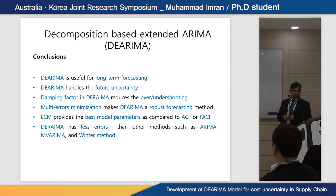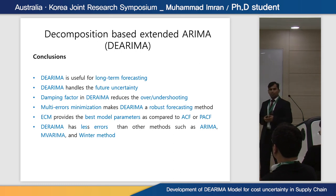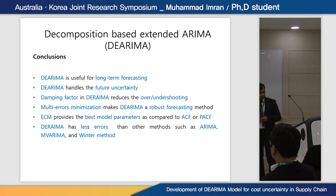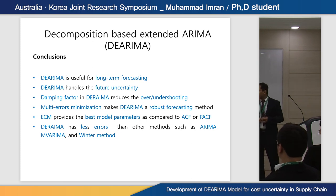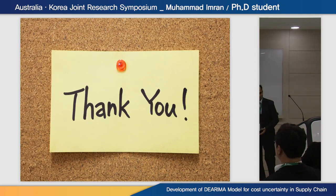In conclusion: de ARIMA is useful for longer-term forecasting; it considers future uncertainty; the damping factor in de ARIMA reduces overshooting; multi-error minimization makes de ARIMA a robust forecasting method; the exact combination method provides better model parameters compared to autocorrelation function and partial autocorrelation function; and de ARIMA has less error than ARIMA, multivariate ARIMA, and the Winter method. These are the references, and that concludes the presentation.